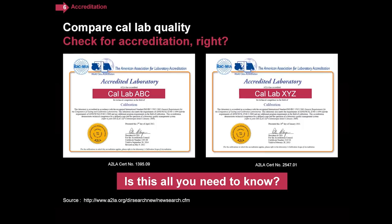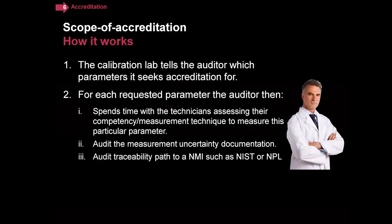The way accreditation works is that during the audit, right up front, the lab tells the auditor the parameters they want to be audited against. For each one, the auditor spends time with the technicians to make sure they know to do all the appropriate things — for example, whether they use torque wrenches for RF microwave, or how careful they are about temperature for gauge blocks. They also audit the measurement uncertainty documentation for the lab's calibration measurement capability. CMC — calibration measurement capability — is the list of the best measurements and associated uncertainty that lab can make. Finally, they audit the traceability paths that we looked at in Module 3.